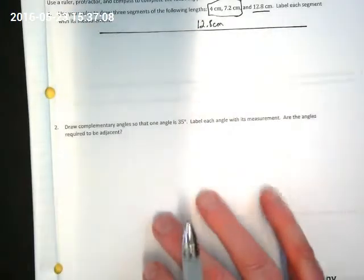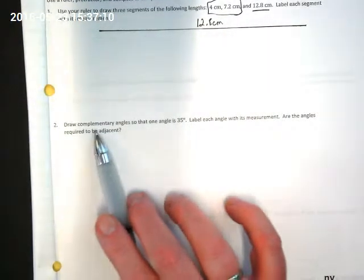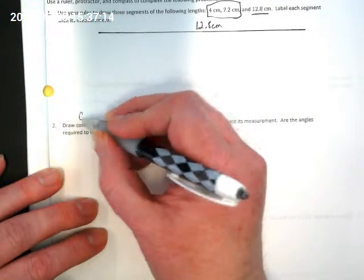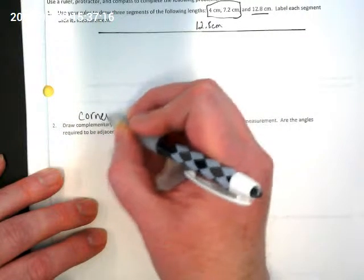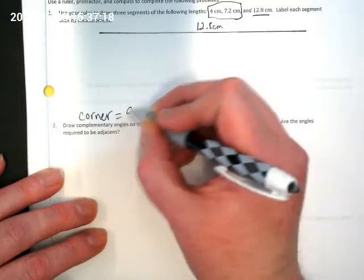Next we're going to look at how to use an angle ruler to make an angle. So this is draw complementary angles. Remember, complementaries are angles that are like corners, which means that they are equal to 90 degrees.